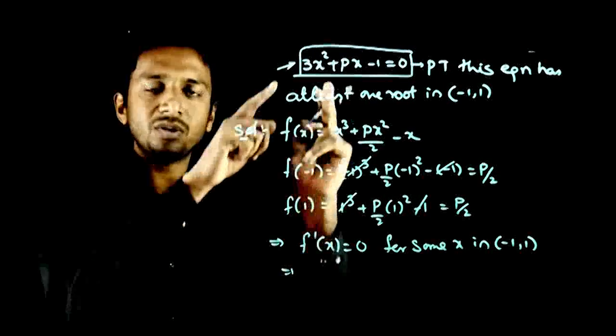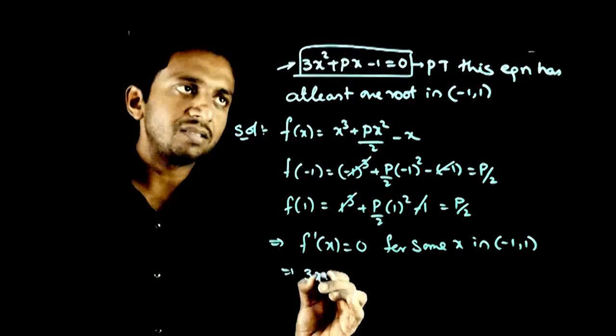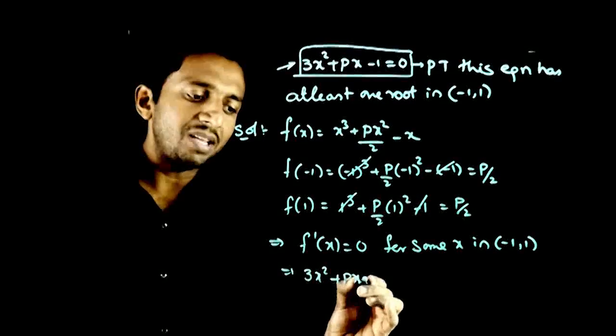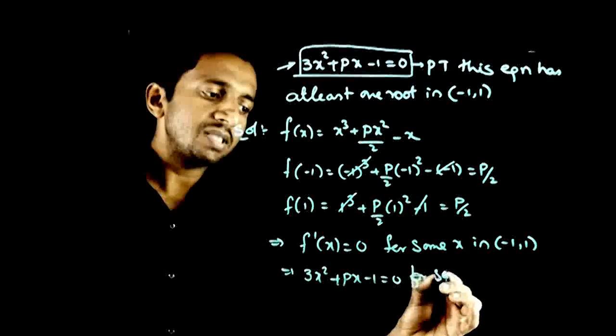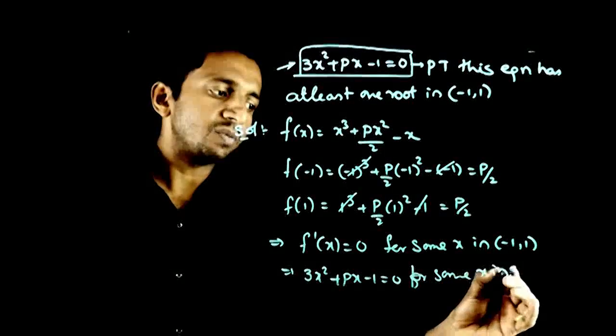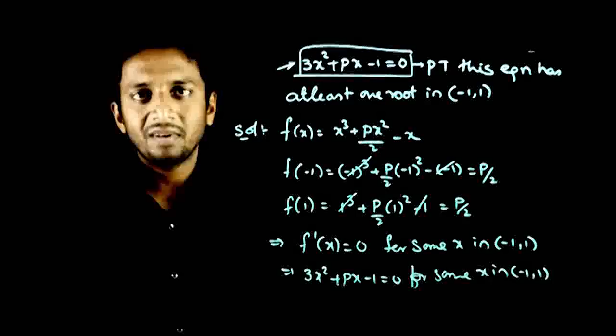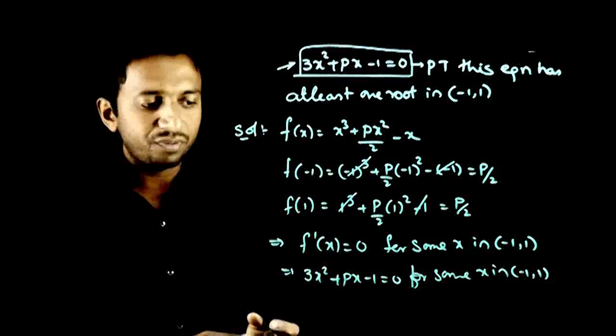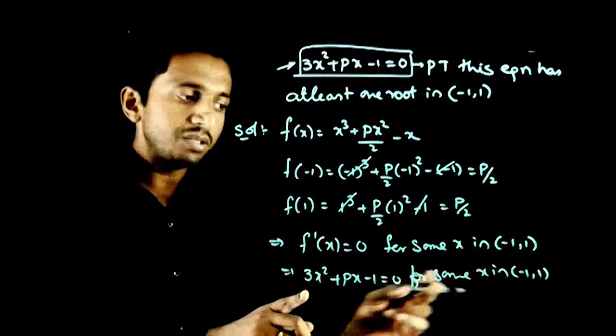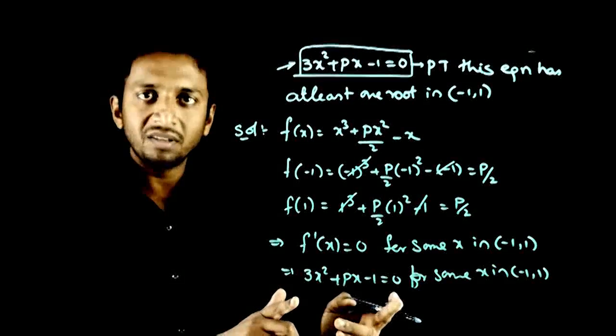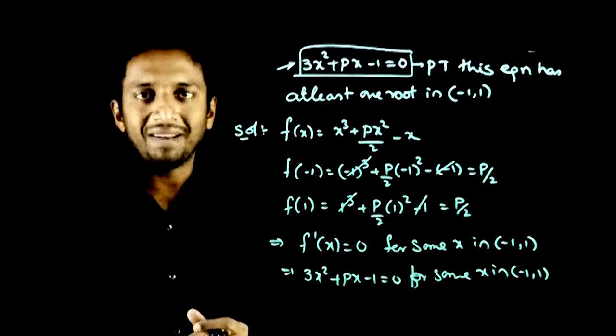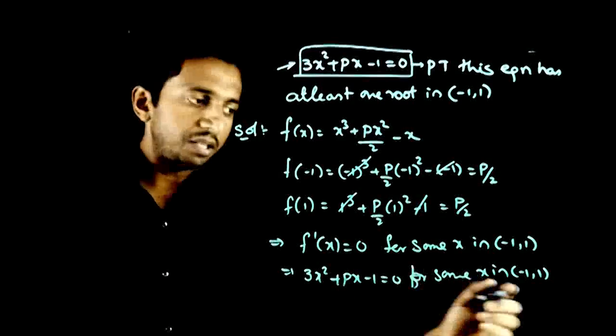This implies the differentiation is the original expression: 3x² + px - 1 = 0 for some x in (-1, 1). That is what you are asked to prove. This means this equals 0 somewhere between -1 and 1, which means this equation has a solution between -1 and 1. Thank you.